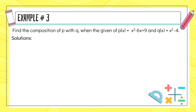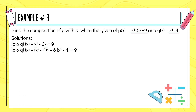Here's another example. Find the composition of p with q when the given of p is x squared minus 6x plus 9, and the given of q is x squared minus 4. Copy the first function p: x squared minus 6x plus 9. So the composition of p with q is equal to x squared minus 6x plus 9. Next, we find the x's and replace them with the second function. There are two x's in the given of p — the x squared and the x beside 6 — so both are replaced by q, which is x squared minus 4. Now we have parenthesis x squared minus 4, all squared, minus 6 parenthesis x squared minus 4, plus 9.